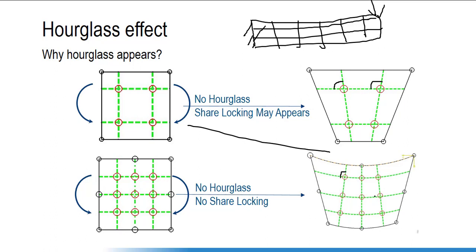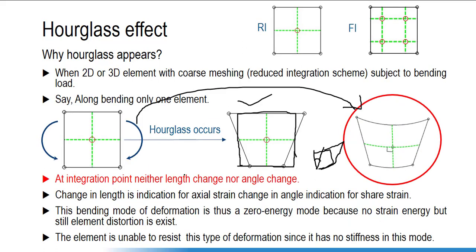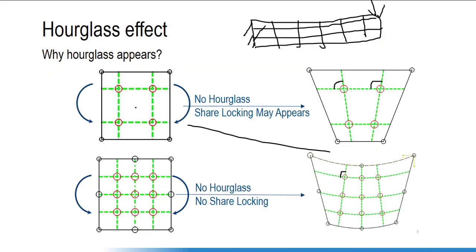Due to the bending load there will be no change in the angle of the lamina. So now it is clear: the hourglass phenomenon occurs when we have a reduced integration scheme with a first order element. If we have a full integration scheme first order element, no hourglass will appear but shear locking may appear. If we have quadratic or second order elements with full integration scheme, there will be no hourglass and no shear locking.